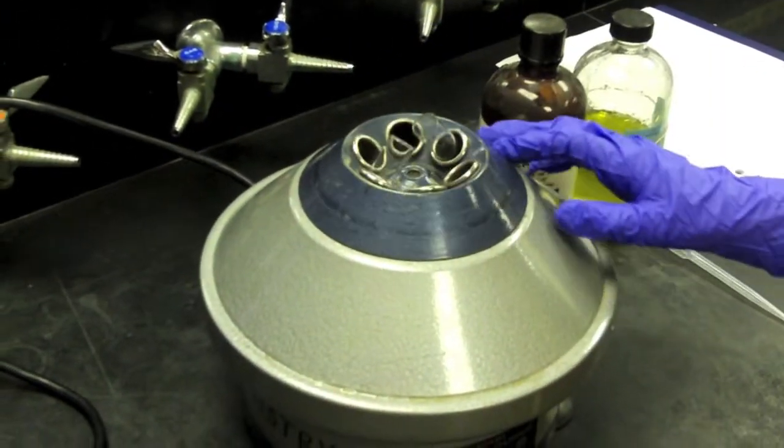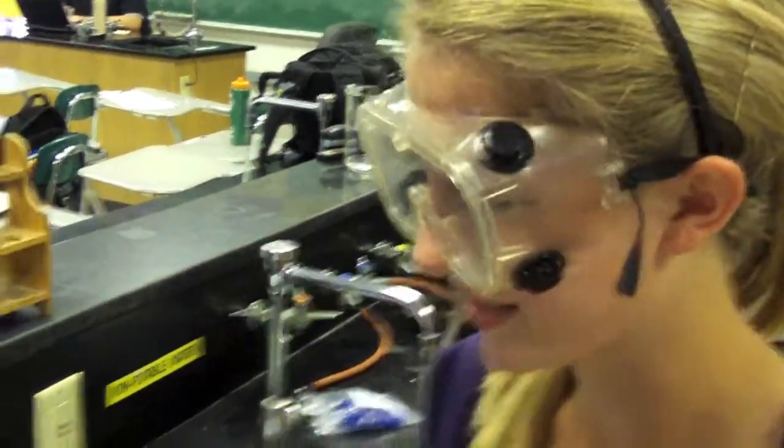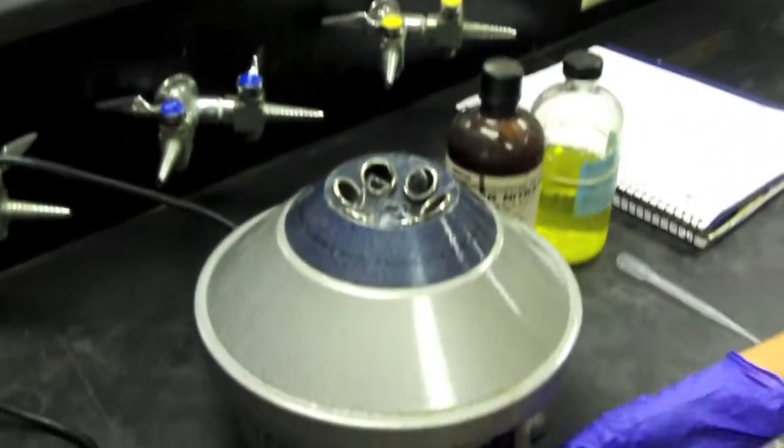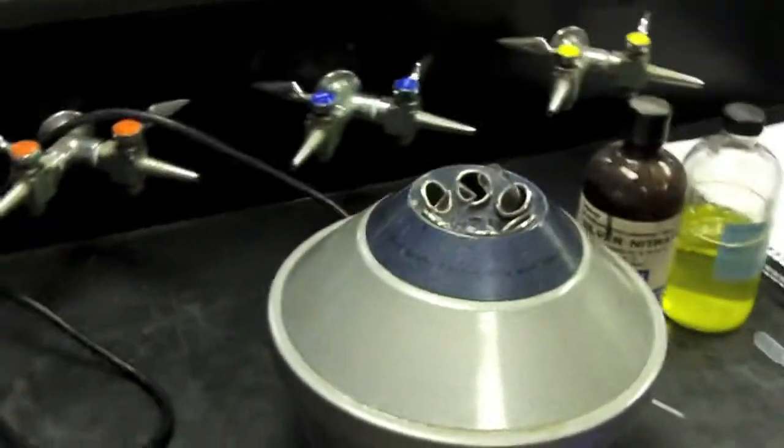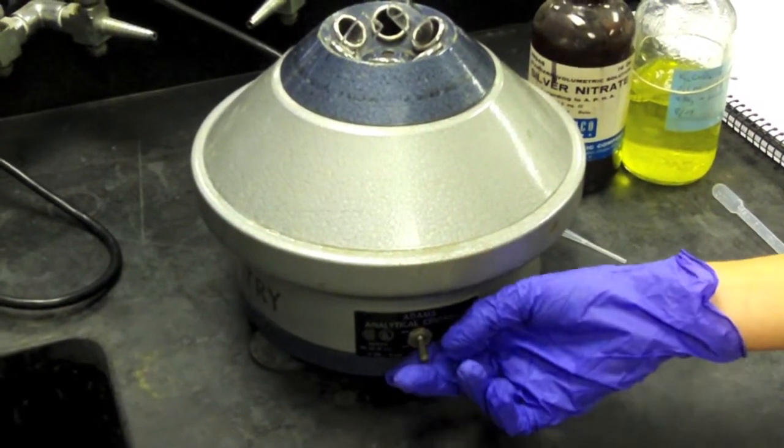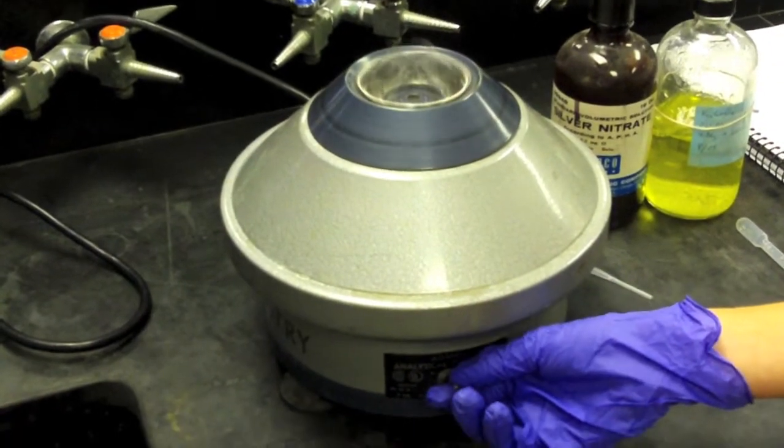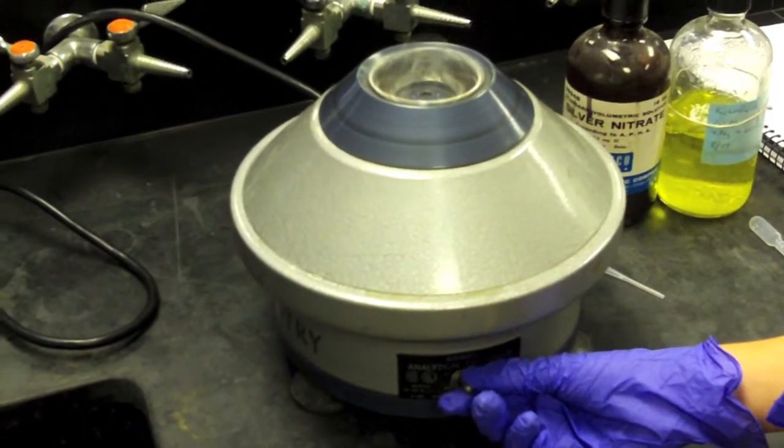Make sure you're wearing goggles because you don't want any shards of glass to hit your eyes. This is a one-speed centrifuge because you can't control the settings, so you just want to flip the switch and it will begin spinning very quickly.